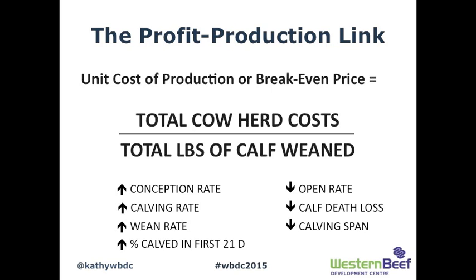How do you go about improving your break-even on your operation? It's by affecting your productivity: increasing your conception rate, increasing your calving rate, your weaned rate, decreasing calf death loss, and tightening your calving span.